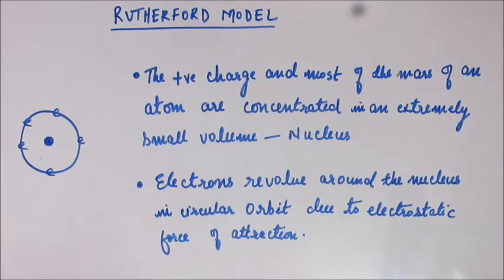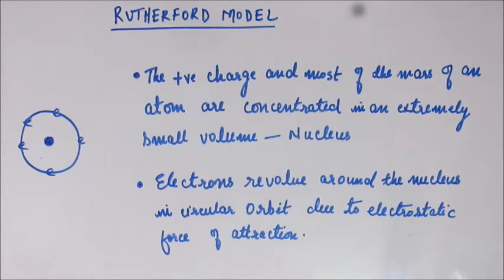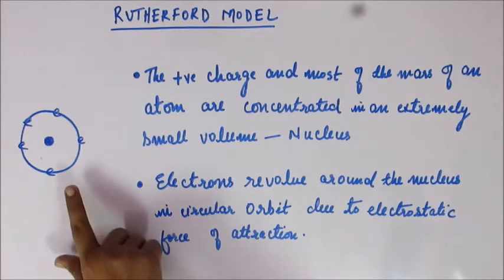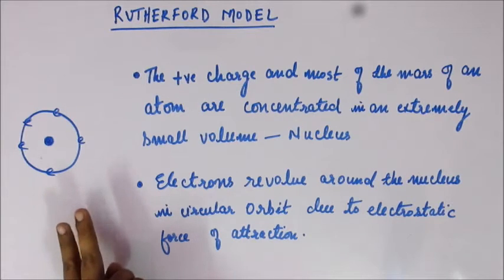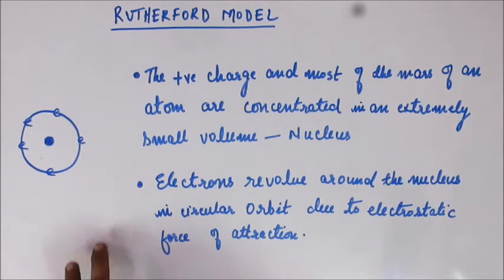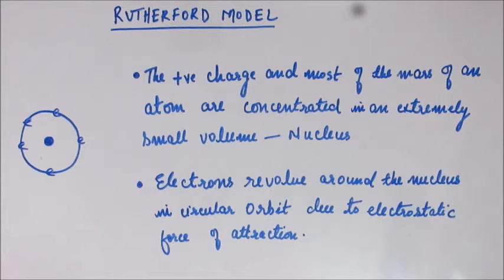So far in the Rutherford model, we have discovered that Rutherford, during the course of his experiment, discovered a discrepancy between J.J. Thomson's model and the practical experimental observations. With further experiments he came up with his own model. The first stark difference between J.J. Thomson's model and Rutherford's model is that Rutherford's model has disjoint positive and negative charge, unlike J.J. Thomson's model in which they were embedded into each other.